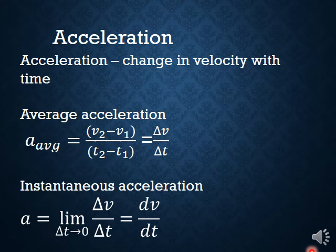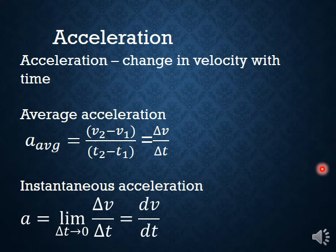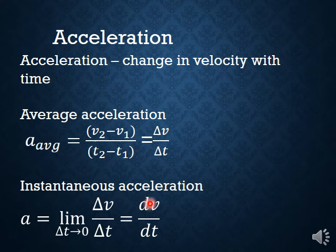We can find average acceleration as the final velocity minus the initial velocity divided by the change in time — delta v over delta t. Just like with velocity, if we make the change in time as small as possible, we get instantaneous acceleration, which is the limit as delta t approaches zero of delta v over delta t. Or, if you're calculus savvy, it's the derivative of velocity with respect to time.